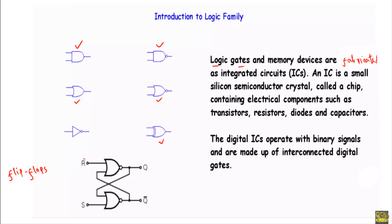For example, here we have an RS flip-flop using NAND gates. You may also be familiar with JK, D, T, and master-slave flip-flops, as well as different types of memory devices. Those logic gates and memory devices are fabricated as integrated circuits or ICs. For example, IC 7432 indicates a TTL OR gate.